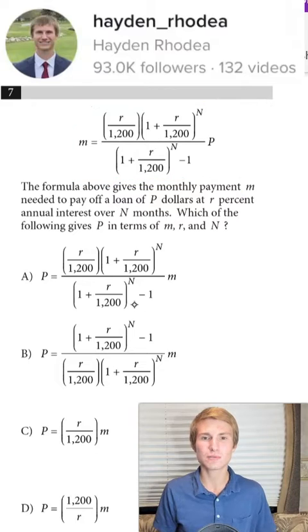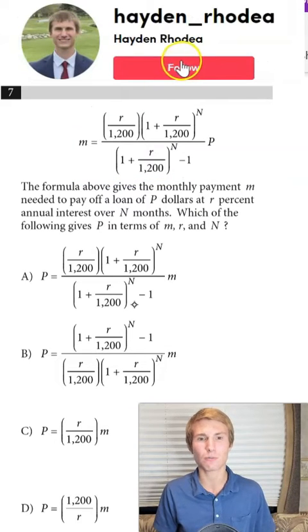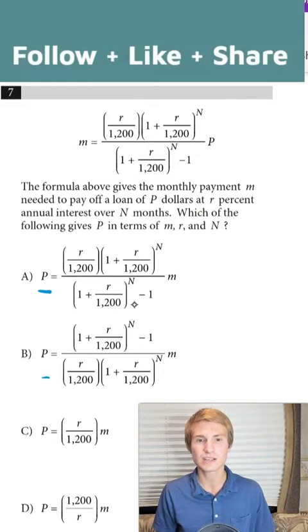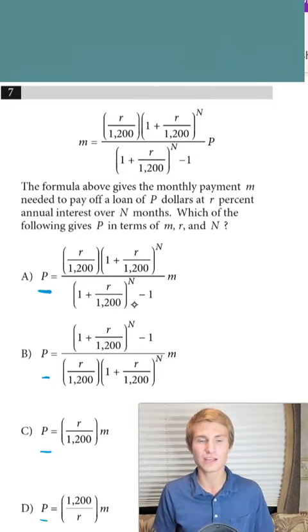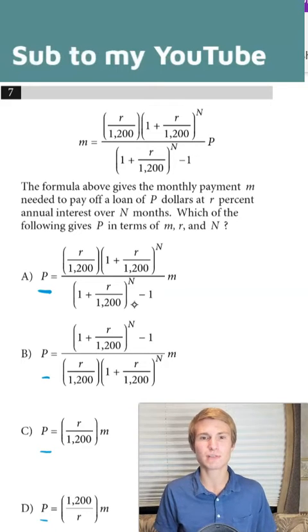Then what you can do is if you look down and on your answer choices you have one of those variables, in this case P, set equal to all the others in every answer choice, then all you have to do is rearrange and solve for P.